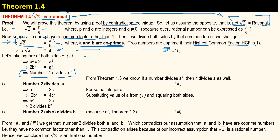We have written that 2 divides a². But by using Theorem 1.3, which states that if a number divides a square then it also divides the number itself, we get that 2 divides a² implies 2 also divides a.